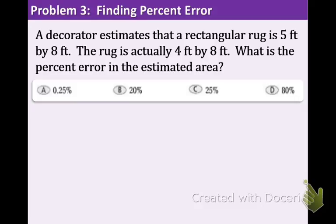In example 3, we have the following situation. A decorator estimates that a rectangular rug is 5 feet by 8 feet. The rug is actually 4 feet by 8 feet. What is the percent error in the estimated area?